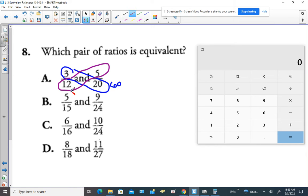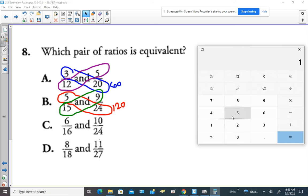So you would compare 5 times 24. So I'm going to use the calculator for that. 5 times 24, and we get 120. And ask yourself, is 15 times 9 also 120? Let's use the calculator. 15 times 9 is not 120. It's 135.